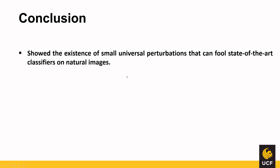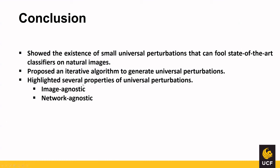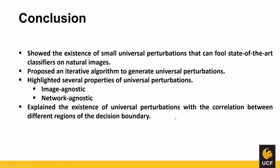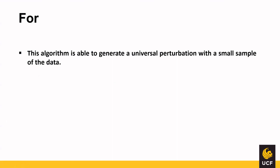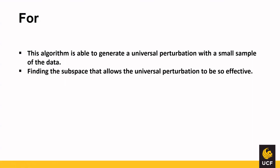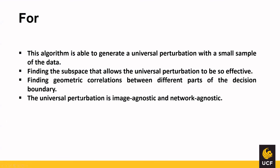In conclusion, they showed the existence of small universal perturbations that can fool state-of-the-art classifiers on natural images, proposed an iterative algorithm to generate universal perturbations, and highlighted several key properties: that they are image and network agnostic. They explained the existence of universal perturbations through correlations between different regions of the decision boundary and provided insights on the geometry of the decision boundaries of deep neural networks. The algorithm can generate a universal perturbation with a small sample of data, and the found subspace explains why universal perturbations are so effective.